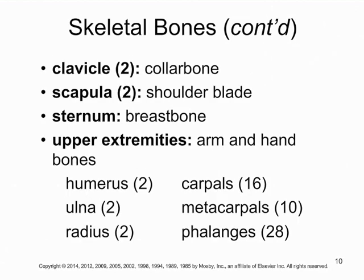Other important bones to know: your clavicles are your collarbones — you have two, stretching horizontally across the front just under your neck. Your shoulder blades are called scapulas. Your breastbone running down the front of your chest is called the sternum. In your upper extremities, you have two humeri — the upper arm bones. Your lower arm bones are the radius and ulna, one on each side. The ulna connects to the elbow.